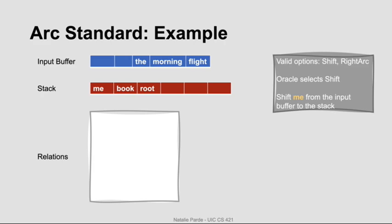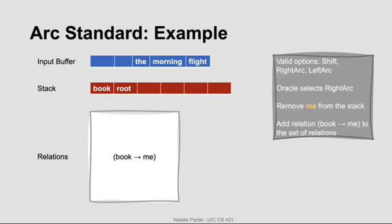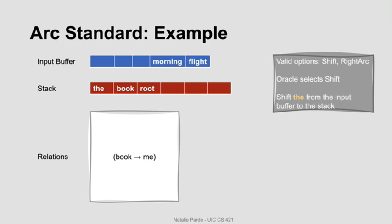Now we have three items on the stack and the input buffer contains 'the morning flight.' All three operators would be valid moves — we have three items on the stack and neither of the top two items is the root. The oracle decides to select right ARC. Right ARC means creating a relation between the top two words in the stack where the top word is a dependent of the second word. We pop the top word from the stack and add the newly created dependency relation to our set. We're back to two elements on the stack, so we can't apply left ARC, but the oracle decides to perform another shift operation, shifting 'the' from the input buffer.